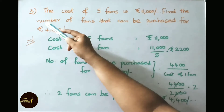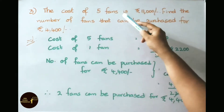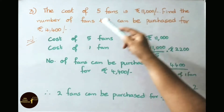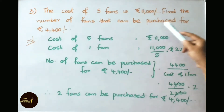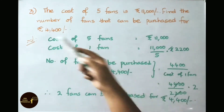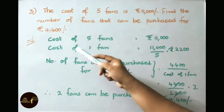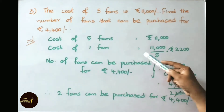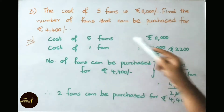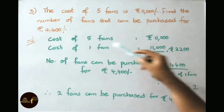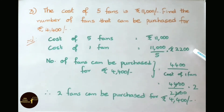Question number 3: the cost of 5 fans is 11,000 rupees. Find the number of fans that can be purchased for 4,400 rupees. Let us see the solution. Cost of 5 fans equals 11,000 rupees. Cost of 1 fan equals 11,000 by 5 — 5 times 2,200 is 11,000 — therefore cost of 1 fan is 2,200 rupees.